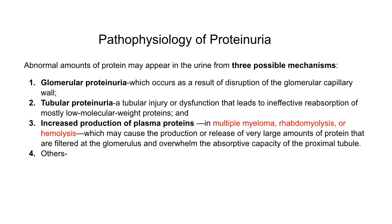Abnormal amounts of protein may appear in the urine from three possible mechanisms. First, glomerular proteinuria, which occurs as a result of disruption of the glomerular capillary wall. Second, tubular proteinuria — ineffective reabsorption of mostly low molecular weight proteins from tubules as a result of injury or dysfunction. Third, increased production of plasma proteins as seen in multiple myeloma, rhabdomyolysis, or hemolysis, which may cause very large amounts of protein to be filtered at the glomerulus, overwhelming the absorptive capacity of the proximal tubule.